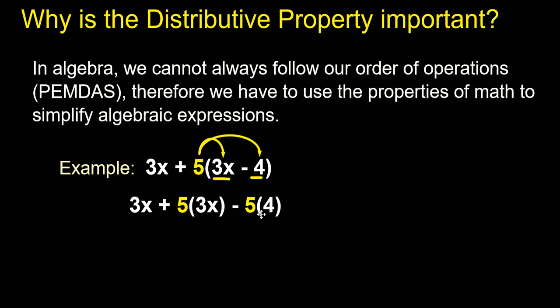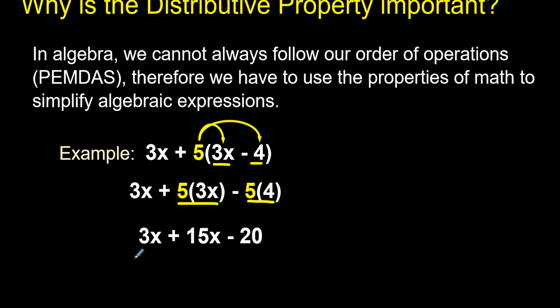So we rewrite the problem and we distribute multiplication of 5 to both terms inside the parentheses. Now I can actually simplify the expression. I solve 5 times 3x and 5 times 4. Then finally I can combine my like terms 3x plus 15x. Remember you're just combining the coefficients and we get 18x minus 20 and this is simplest form. We couldn't do that without the distributive property.